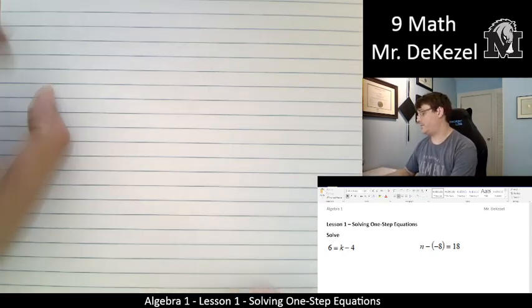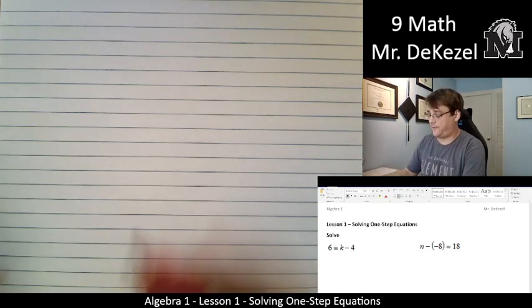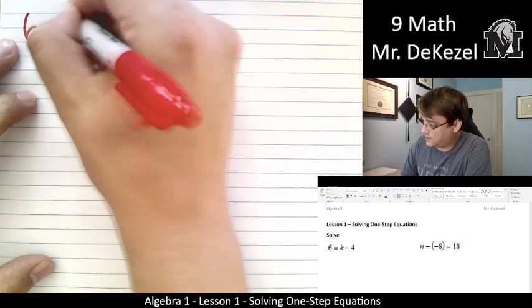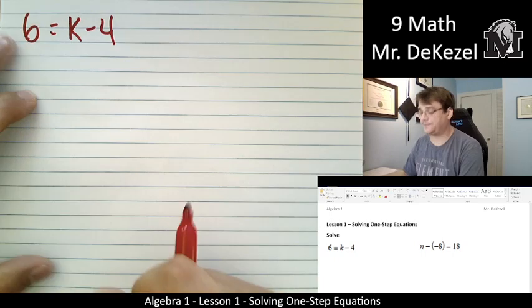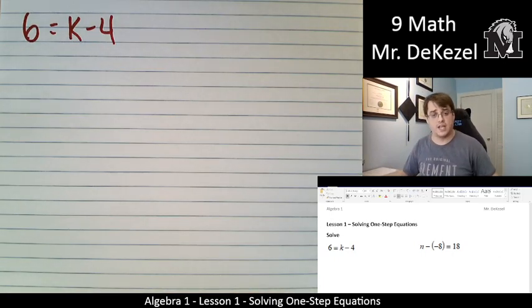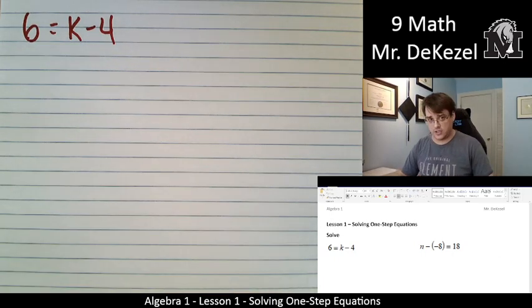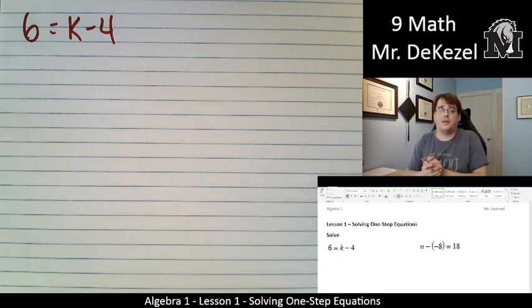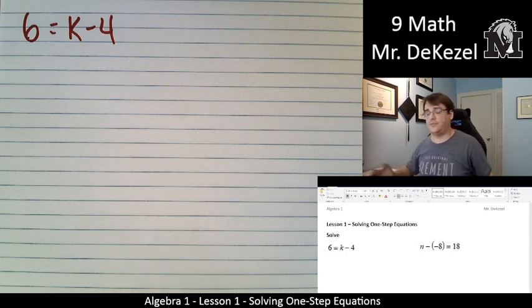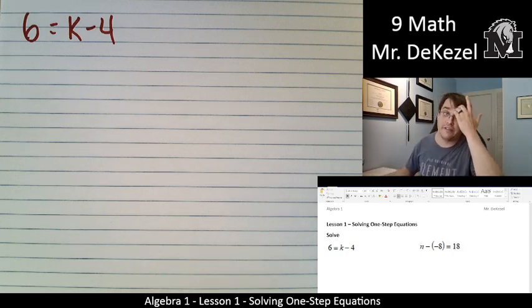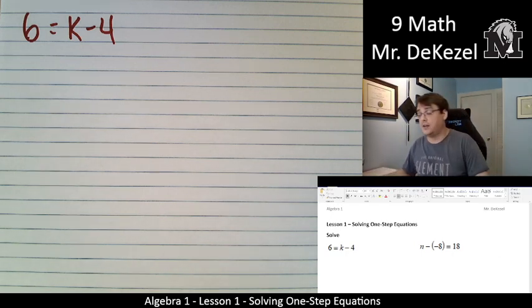All right, so we have the first one, 6 equals k minus 4. And it says to solve. We have an equal sign. These are equations, which means we are going to find what k equals. I know we've been searching for x for hundreds of years or whatever. We're going to find it today. Whether that's k or x, whatever variable it is, we are going to find that.